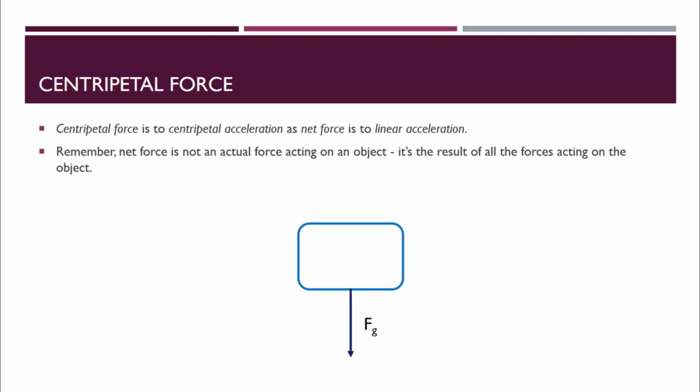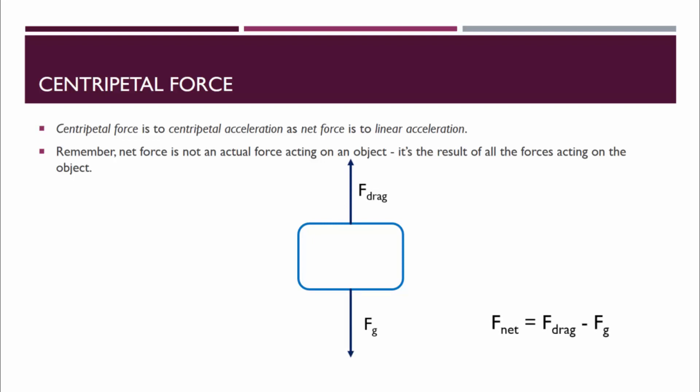Here's an object in free fall. It is experiencing a force of gravity only, which means that the net force is equal to Fg. A skydiver feels two forces: a gravitational force down, and a drag force up from the parachute. In this case, we would say that the net force is the force of drag minus the force of gravity.